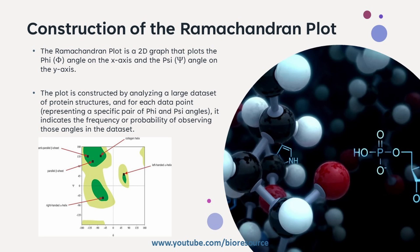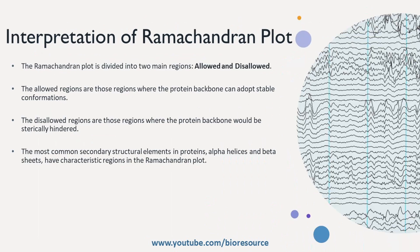So now we have the Ramachandran plot — how do you interpret it? The Ramachandran plot is divided into two main regions: allowed and disallowed. The allowed regions are those where the protein backbone can adopt a stable conformation. The disallowed regions are those where the protein backbone would be sterically hindered. The most common secondary structure elements in proteins — alpha helices and beta sheets — have a characteristic region in the Ramachandran plot.